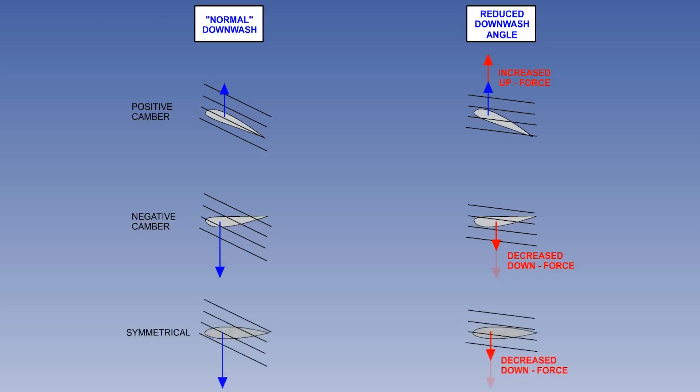With a symmetrical tailplane, the effect is similar to the negative camber, so it can be said that a decrease in downwash will always result in a nose-down pitching moment. The opposite is true of increased downwash.